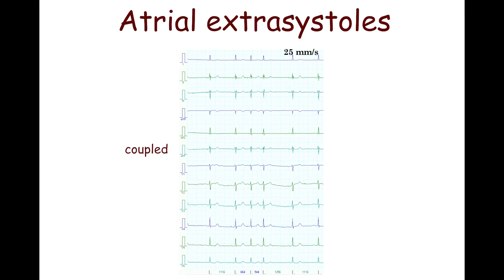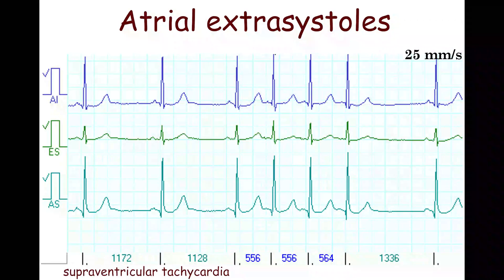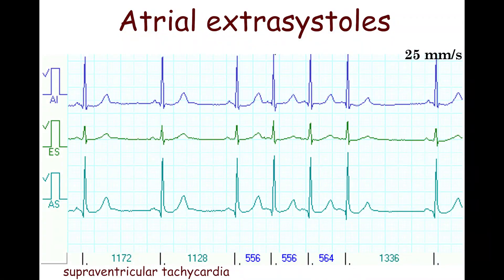Two consecutive premature beats are called coupled extrasystoles. Three or more consecutive supraventricular extrasystoles are defined as supraventricular tachycardia. However, some authors define three consecutive premature supraventricular beats as supraventricular triplets.